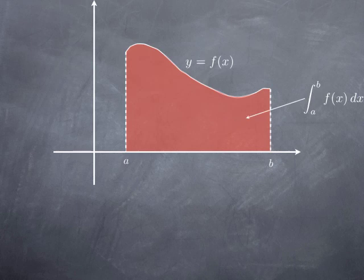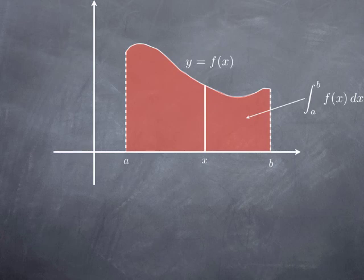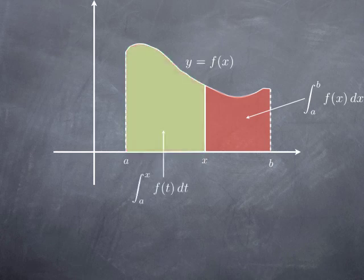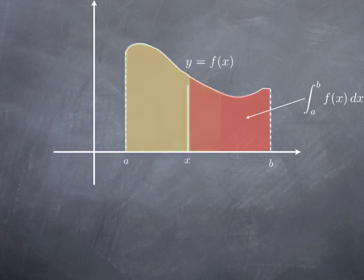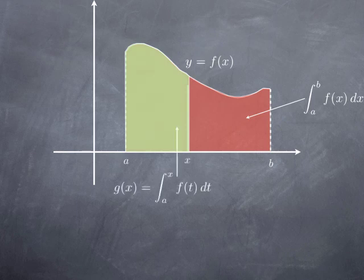For the sake of argument, we're going to look at a continuous function that is positive on a closed interval, because in that case we have an interpretation of the definite integral in terms of the area under the graph of the function. So if I pick an x in the interval [a, b], I can look at the area under the graph over the interval [a, x], which is the integral from a to x of f(t) dt — just changing the name of the variable because x is one of the bounds. When x changes, the area changes too, so this integral is a function of x. Let's call it g(x).